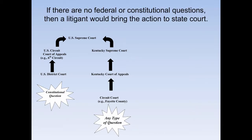Next question: if there are no federal or constitutional questions, then a litigant would bring the action to state court. Have a quick look at that chart. Hopefully you came up with true. When things affect the Constitution, they can go through the federal court system. But our Constitution is a limited Constitution — limited to only those things inside of it — meaning all other questions go directly to state court and can eventually work their way up through the court of appeals, through the state Supreme Court, to the U.S. Supreme Court. Keep in mind the Constitution does not mention the word education, although it does mention religion, expression, and search and seizure.